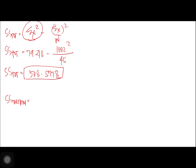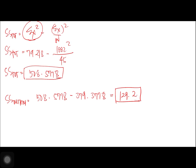For SS within, we have SS total minus SS between: 508.5778 − 379.3778 = 129.2.